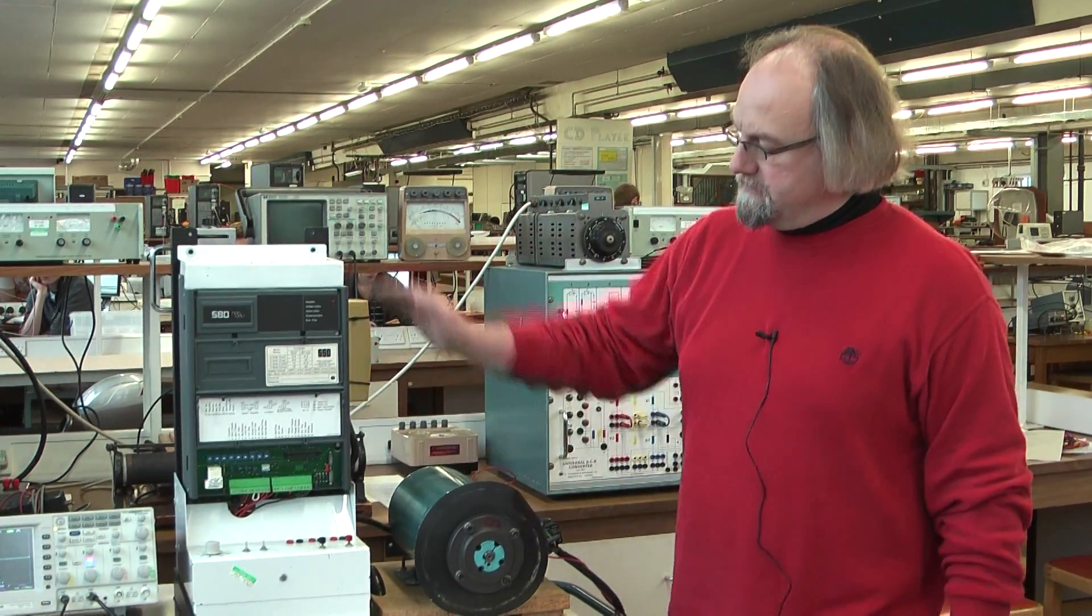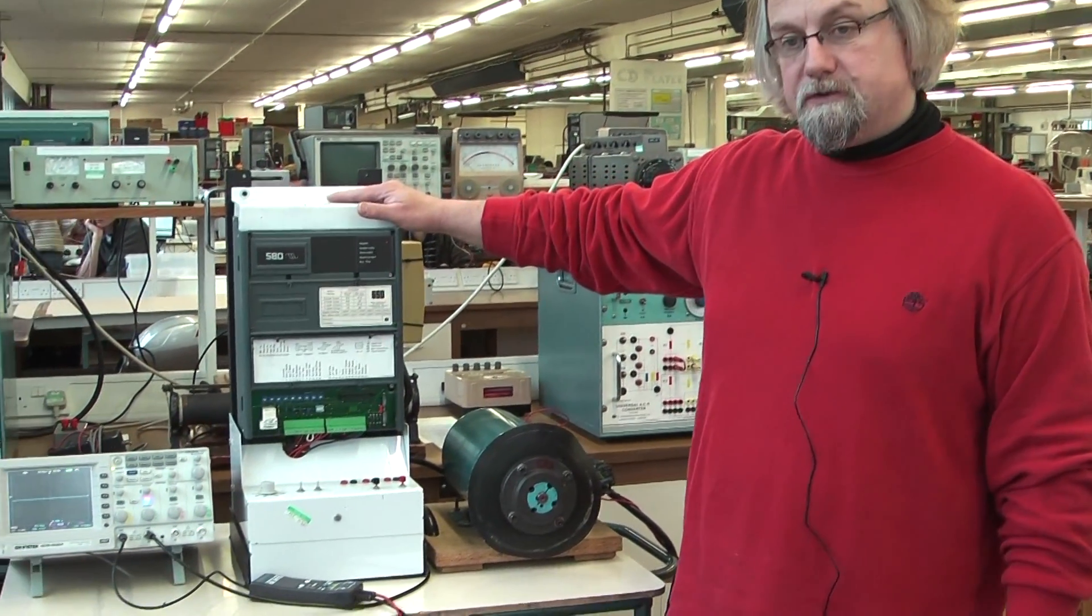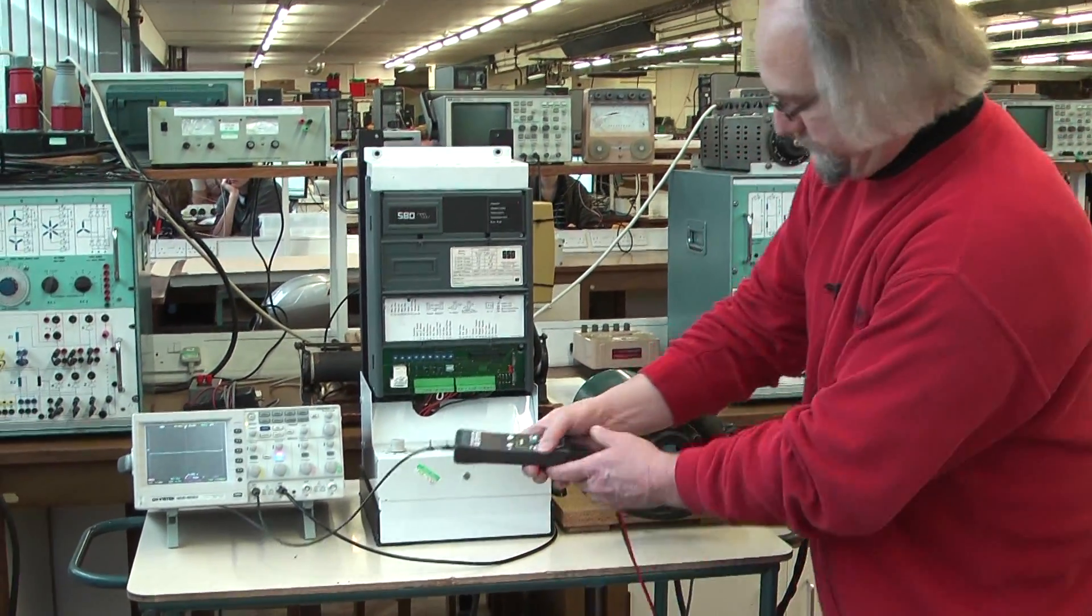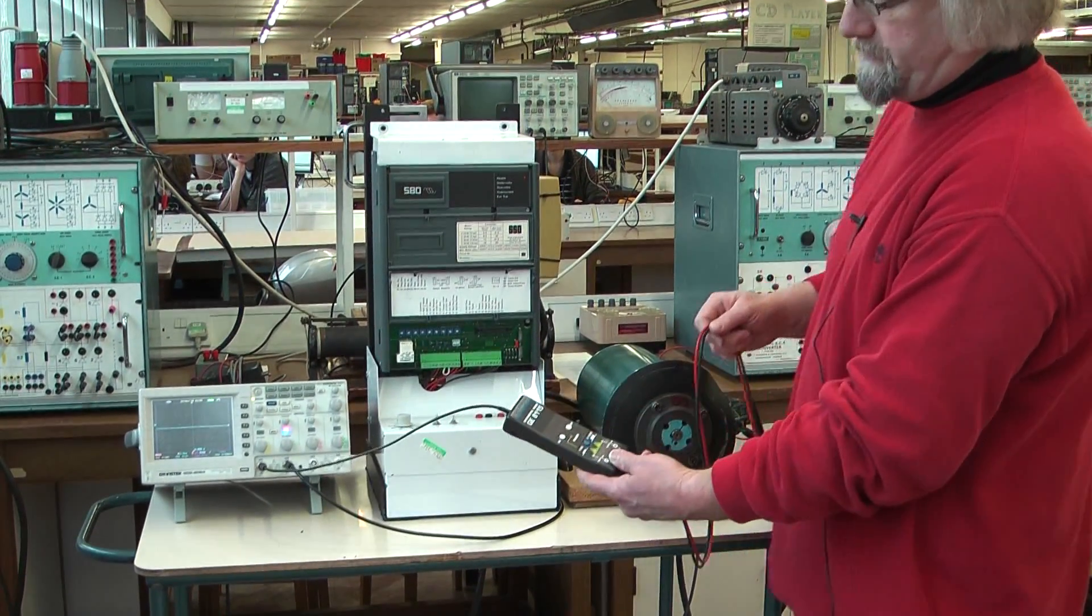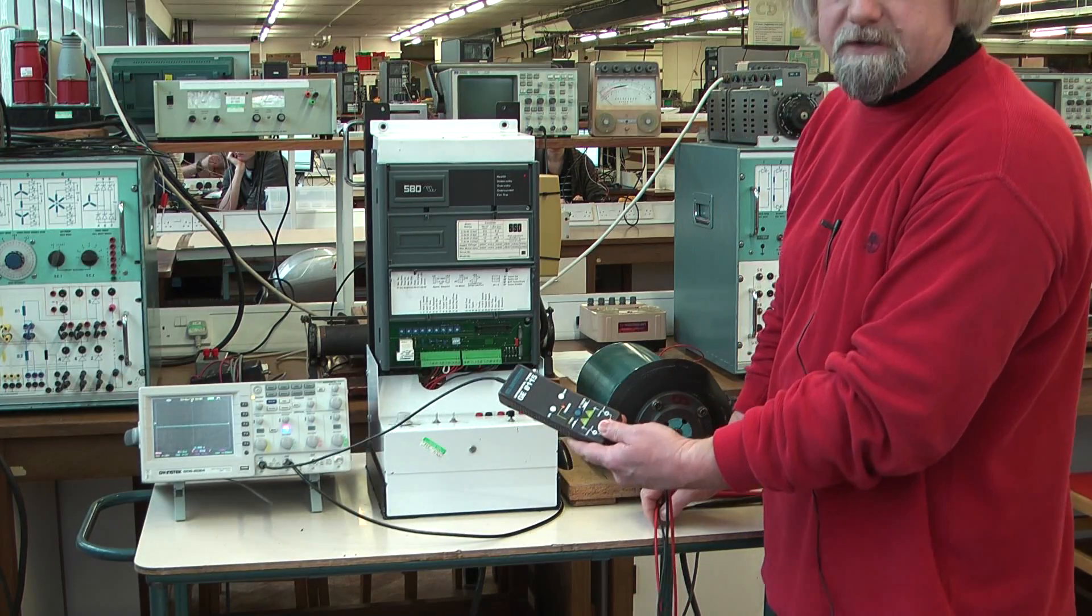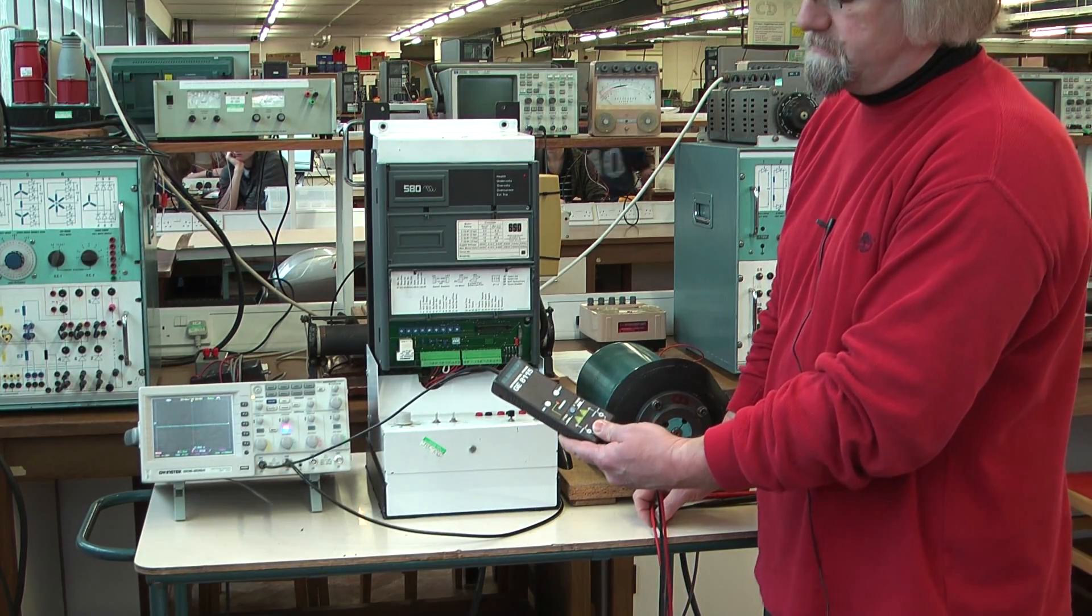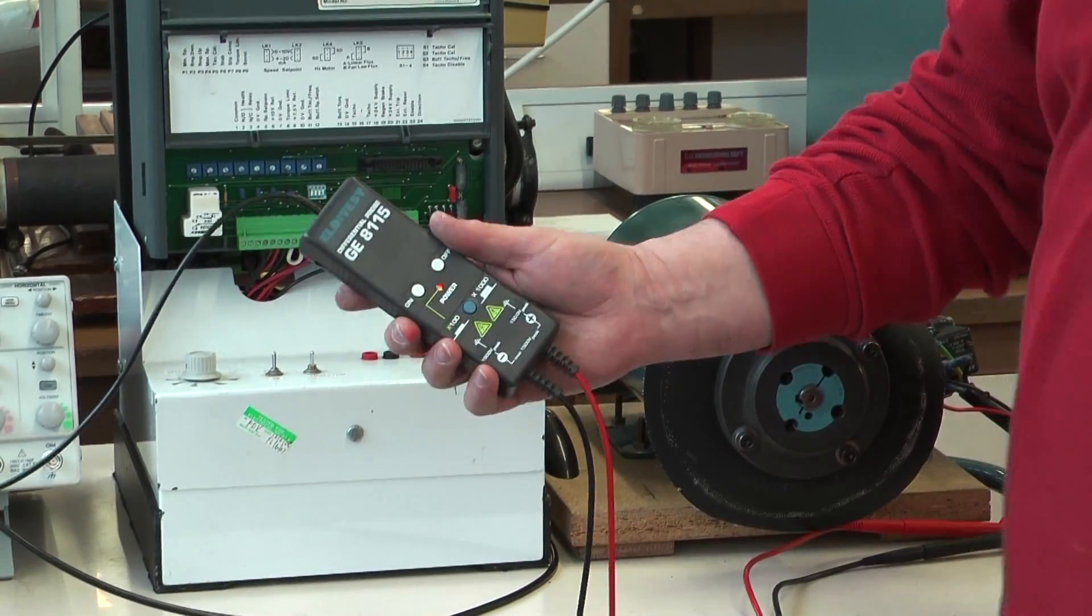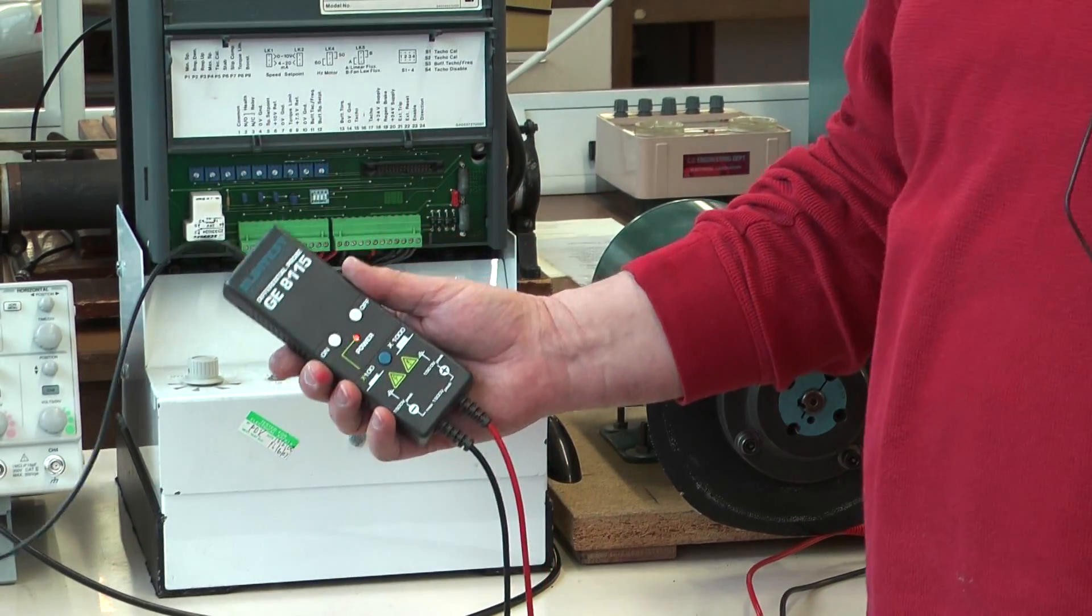Here's an induction motor. Here's the induction motor drive, often called an inverter. We're going to measure the voltage on the motor across two windings using the differential probe. This keeps us safe and isolates the voltage. Don't do these measurements unless you have something like this to measure voltages.